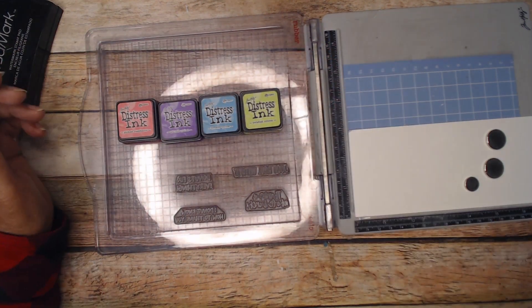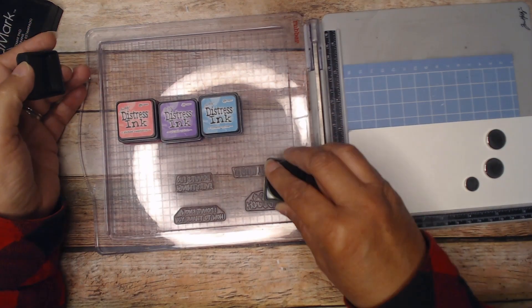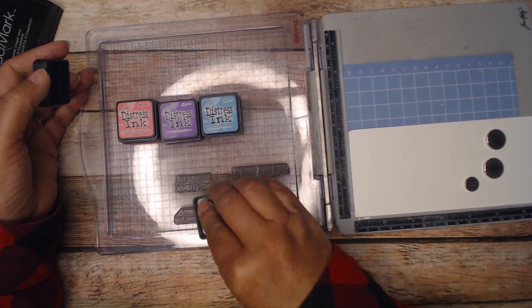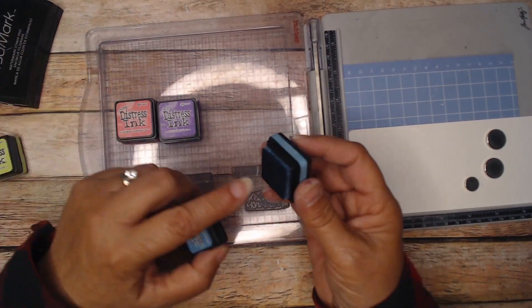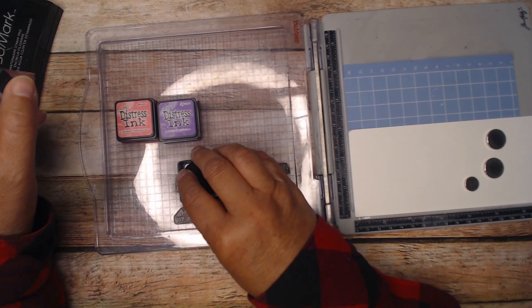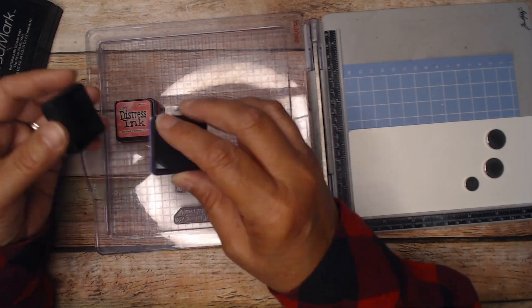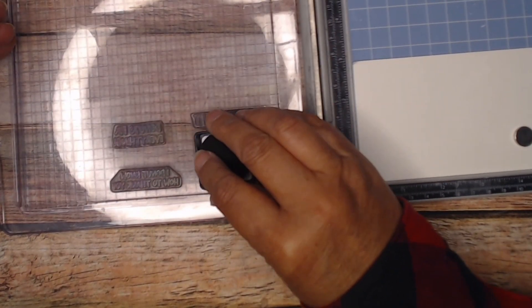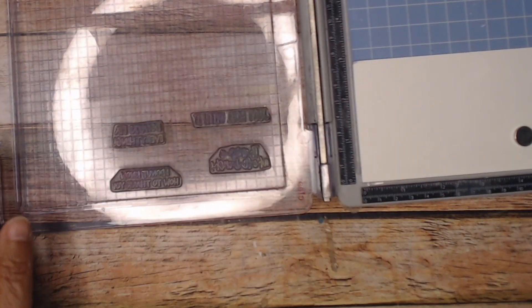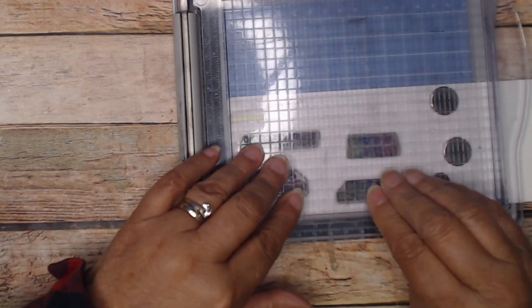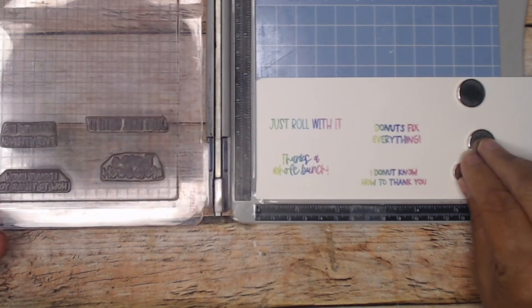I have picked Raspberry, Wilted Violet, Broken China, and Twisted Citron. I'm going to start with the Twisted Citron and put some on the left hand side. Then I'll move to Broken China, and I'm just using the edge of it. I'm not being too picky about where it's going. Then we'll go with Wilted Violet. I'm starting here on the right side and letting it mingle with the violet. And then I'll go ahead and stamp, and it came out rainbowy. Isn't that pretty?